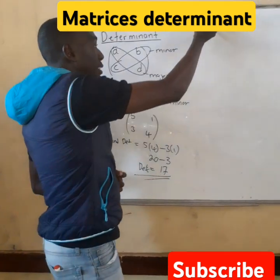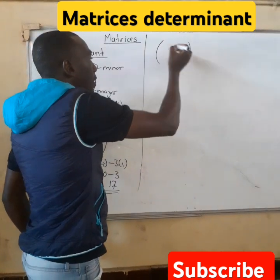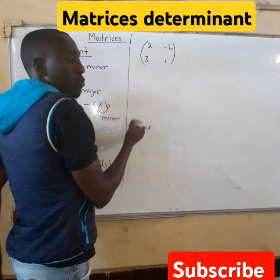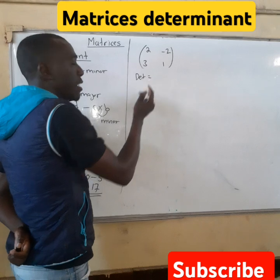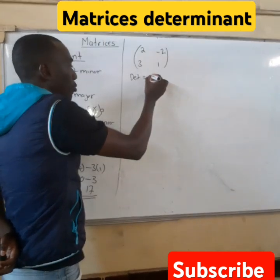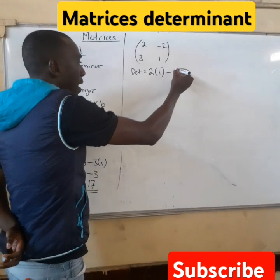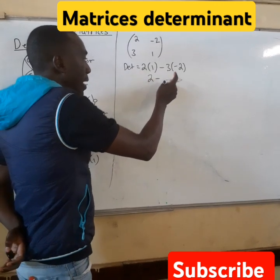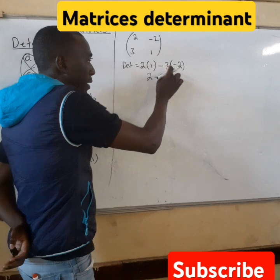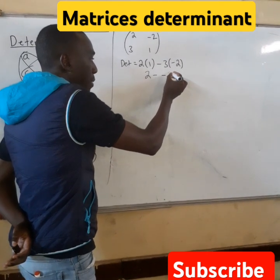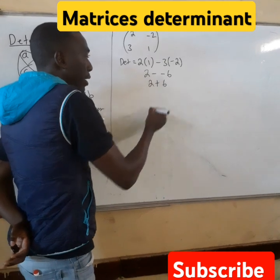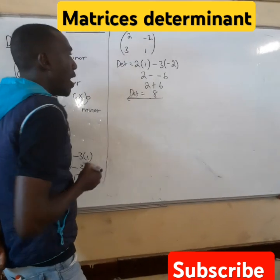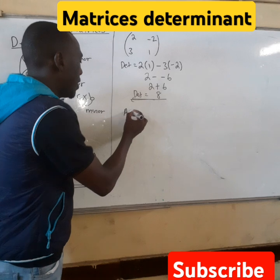The determinant is equal to 17 — this is the determinant. For another example, let's say the determinant equals... 2 times 1, minus 2 times 3. So, 2 times 1 you get 2, minus 3 times... minus 3 times minus 2, which gives a plus. So our determinant here equals 8. This is how we find our determinant.